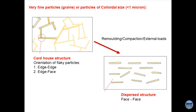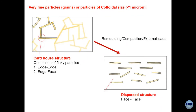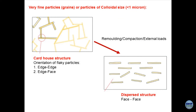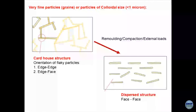If you compact the soil or apply some load on a card house structure, it gets converted to dispersed structure — more orderly, face to face. In geomechanics, these two types of structure are going to have a lot of significance, and I will be utilizing these mechanisms to define how the properties of the soil mass change.